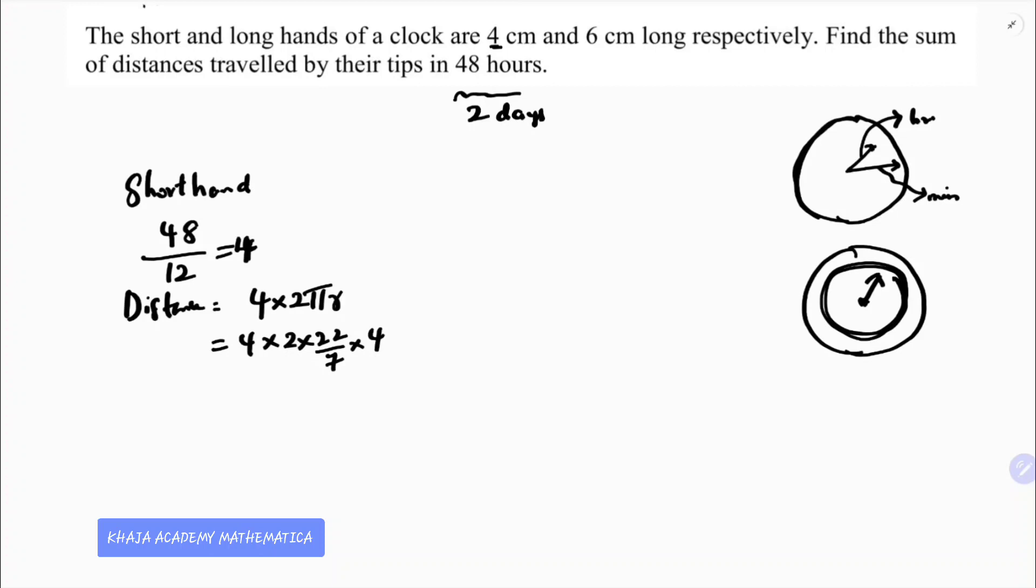If you multiply 4 into 2, which is 8, 8 into 22 is 176, into 4 by 7, so 704 by 7 centimeters.